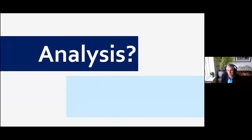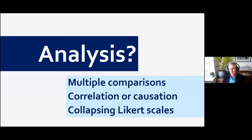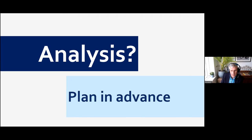Finally, regarding data analysis: plan in advance and make sure you have the skills within your team to analyse the data. Common pitfalls include doing descriptive statistics or T-tests on multiple different comparisons, confusing correlation and causation, and mishandling Likert scales. With Likert scales — where participants are asked whether they completely agree, somewhat agree, neither agree nor disagree, somewhat disagree, or completely disagree — report all of it. Commonly researchers collapse agree and disagree from five points into two, which discards a whole bunch of data from which something useful might be found. The key thing is to plan in advance.